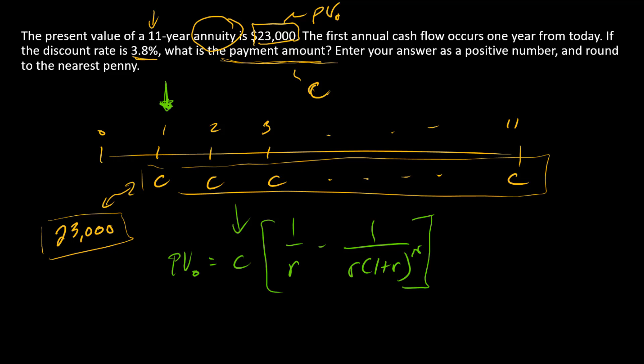We're going to insert into PV $23,000, into r we're going to insert 0.038, and into our exponent we're going to insert 11.